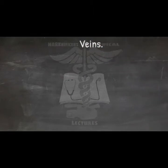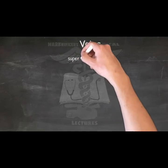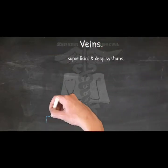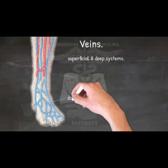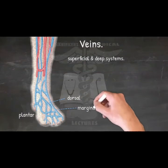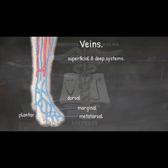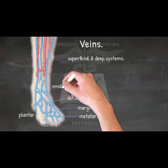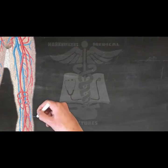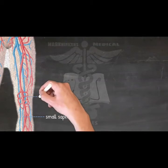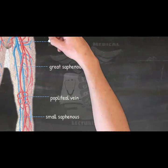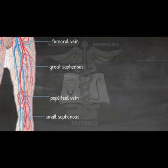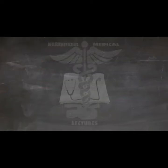Veins. The venous drainage of the lower limb can be divided into superficial and deep systems. Venous drainage happens in the opposite direction compared to the arterial blood supply. Starting from the foot, the superficial system begins with the superficial dorsal and plantar venous networks together with the marginal and metatarsal veins. These veins drain from one into another, ultimately ending up in one of the two saphenous veins: the small saphenous or the great saphenous vein. The small saphenous vein ascends along the posterior leg, ultimately draining into the popliteal vein located within the popliteal fossa. The great saphenous vein travels along the medial leg and continues along the thigh, opening into the femoral vein, and also receives blood from the small saphenous vein along its course.